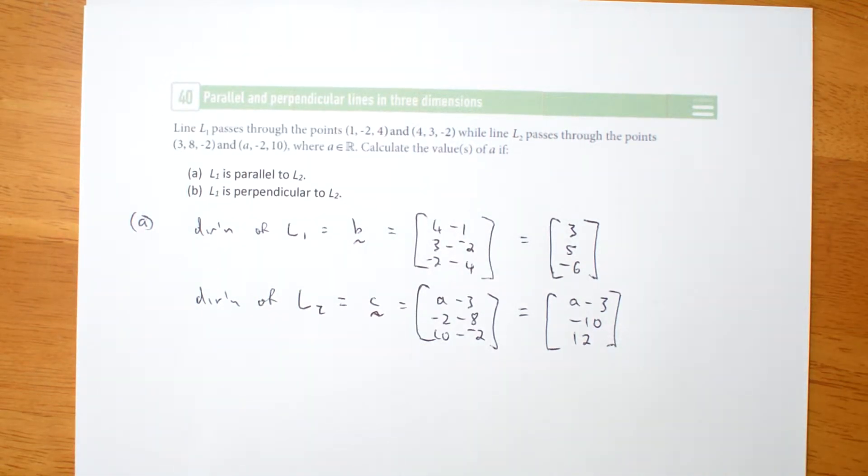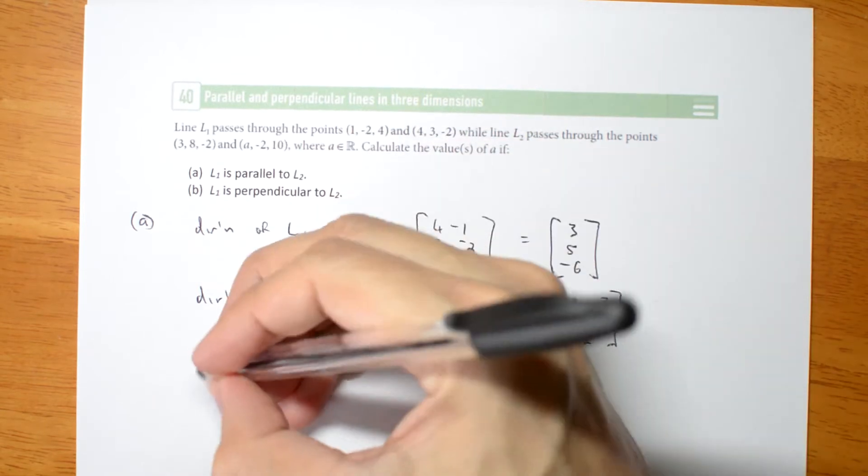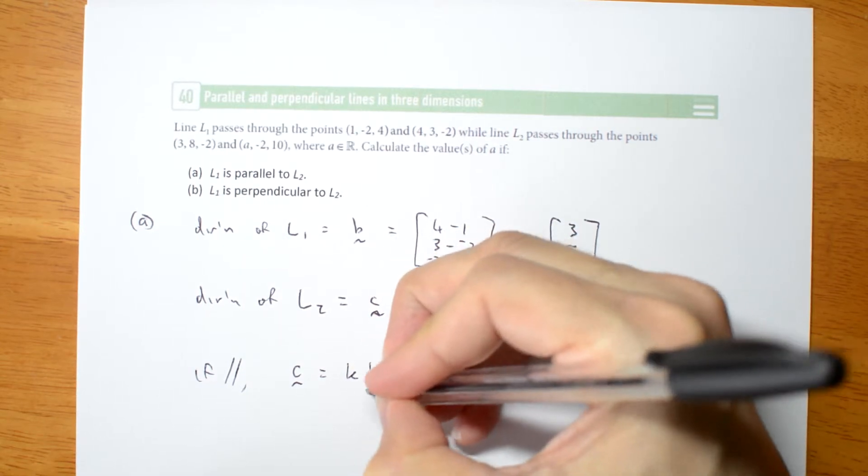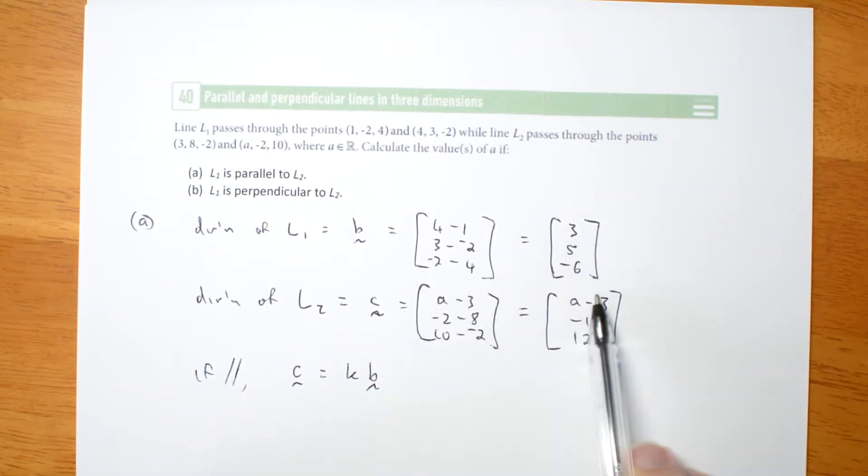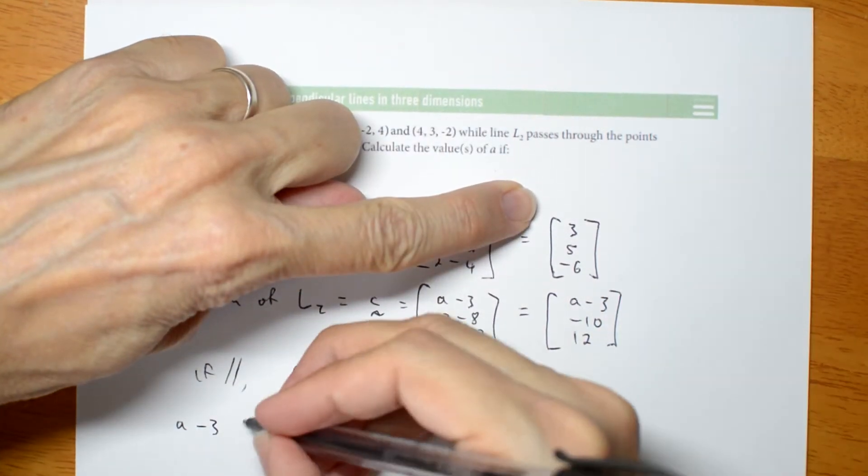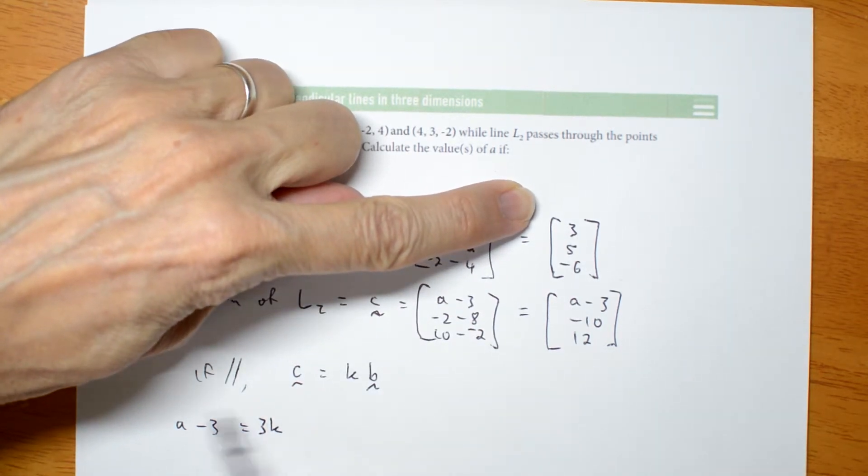Okay, if they're parallel, then one is a multiple of the other. So if parallel, C must be some constant times B. If we work with each component, then I should be able to work out a value for K. I'll get three different equations. First, let's look at the X coordinate. A minus 3 is K times 3, which is 3K. This doesn't help me yet. I don't yet know what K is.